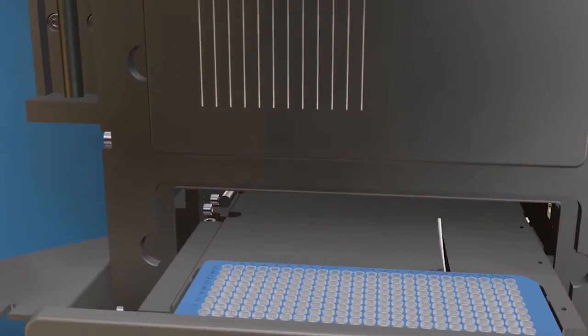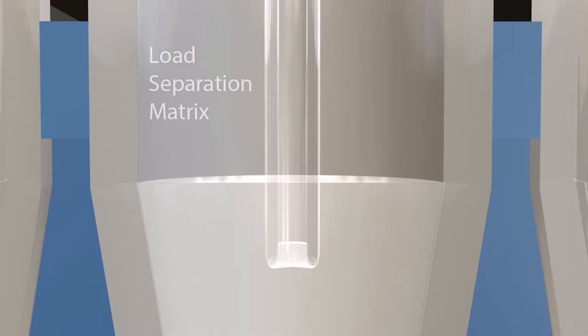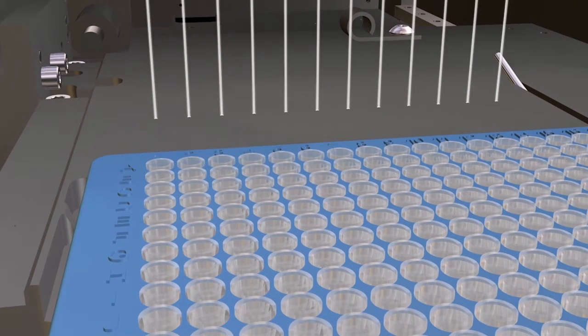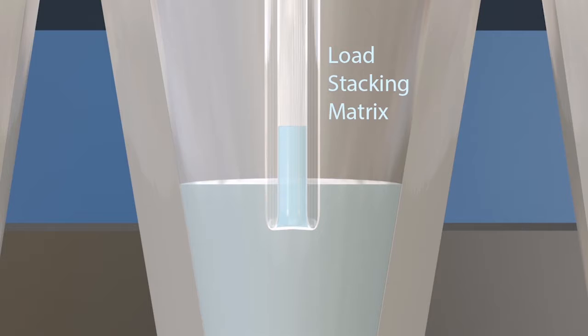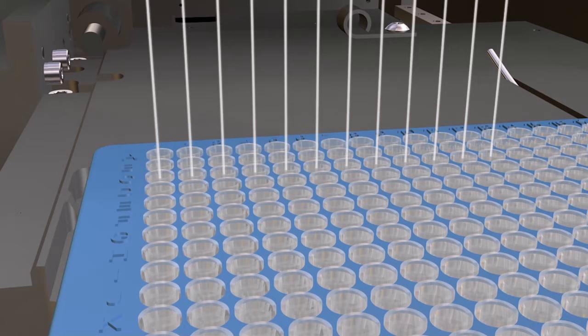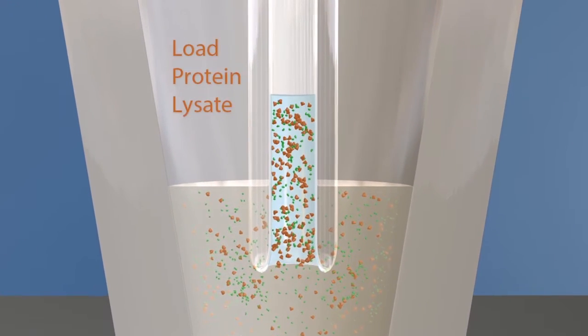Sally Sue will load samples, antibodies, and reagents into each capillary from a 384-well plate. She begins by first loading the separation matrix and then a stocking matrix into each capillary. Sally Sue then loads your protein lysate.